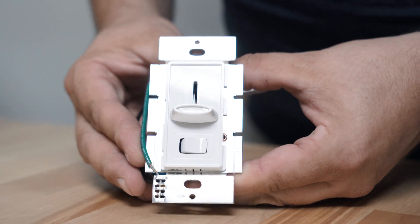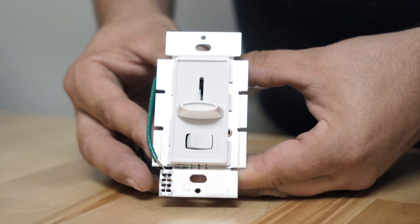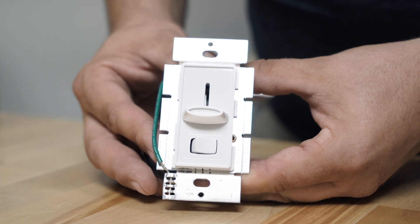So this is an ELV type dimmer, meaning it's for electronic low voltage loads. This is not to be used with MLV type loads. Lutron has other dimmers that are better suited to that.